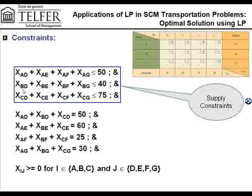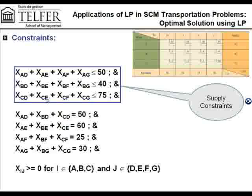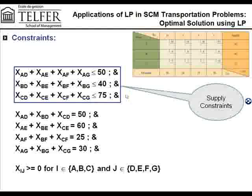Similarly, everything coming out of B and going to D, E, F, and G has to be less than or equal to 40. Everything coming out of C and going to D, E, F, or G has to be less than or equal to 75. So those are your supply constraints.